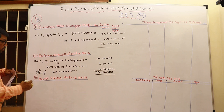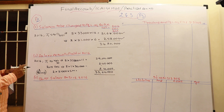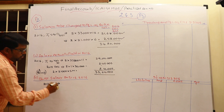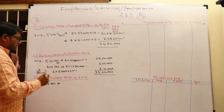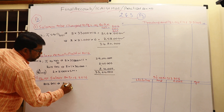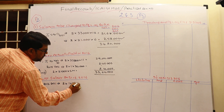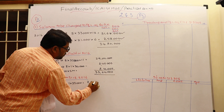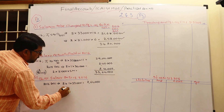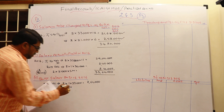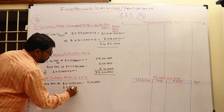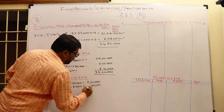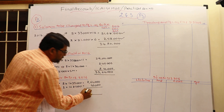Now the outstanding salary for 2016: December month salary is outstanding and will be paid in January 2017. For 8 employees: 8 × 1 × ₹33,000 = ₹2,64,000. For the two trainees: 2 × 1 × ₹21,000 = ₹42,000. Total outstanding salary is ₹3,06,000.